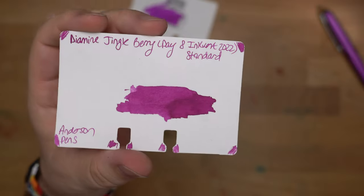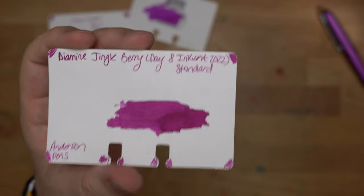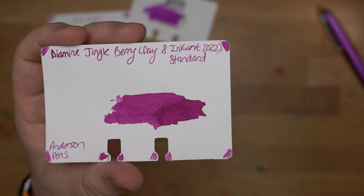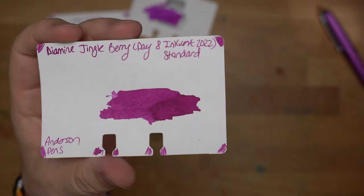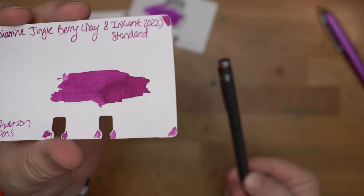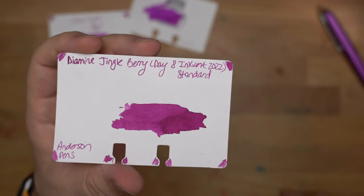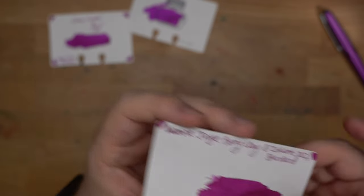Next up, another ink that I've had in a pen since I got this ink. This is Diamine Jingleberry, which was in the ink vent this year. And I tell you, I've had it in this Rotring 600 ever since. I just keep refilling it. It's that good. So Diamine Jingleberry, gorgeous ink.